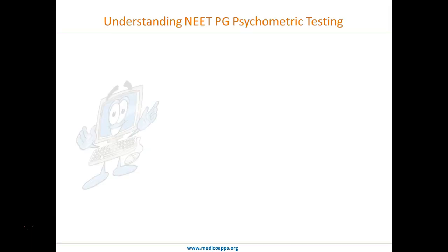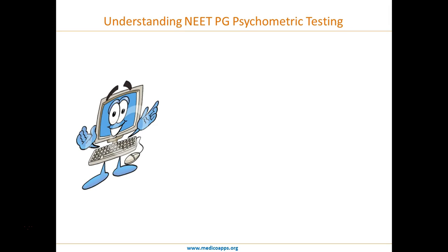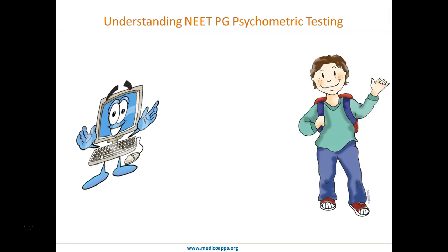Basically, psychometric testing is nothing but a computer being asked to evaluate a student. Just imagine that the computer, in simple terms, has to say — based on the kind of answers the student gives — whether he is of class 1, class 2, class 3, class 4, class 5, class 6, or class 12.